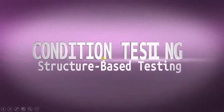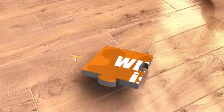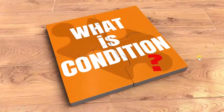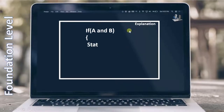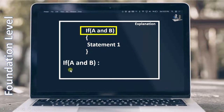Let's start with the first technique: condition testing. First we have to understand what condition testing is. Have a look at this particular code where we say 'if A and B' — if this particular decision is correct, then execute statement 1. When I talk about condition, we first have to focus on this particular decision. 'If A and B' as a whole is called a decision.